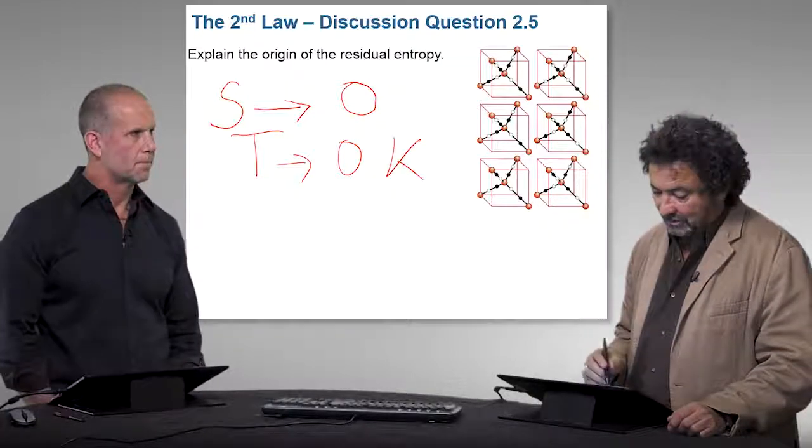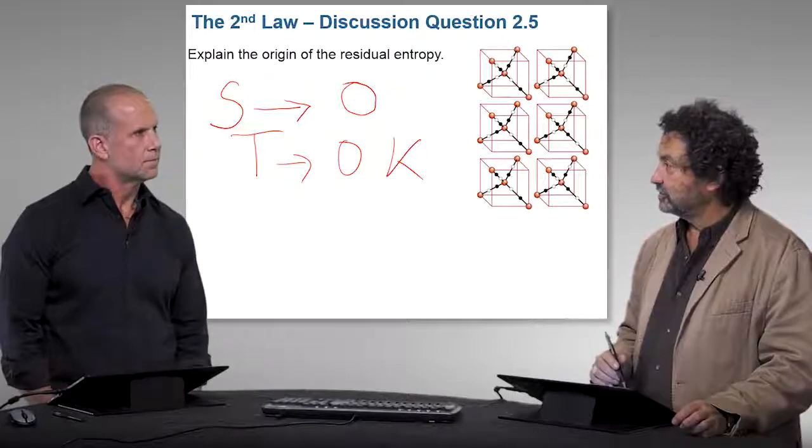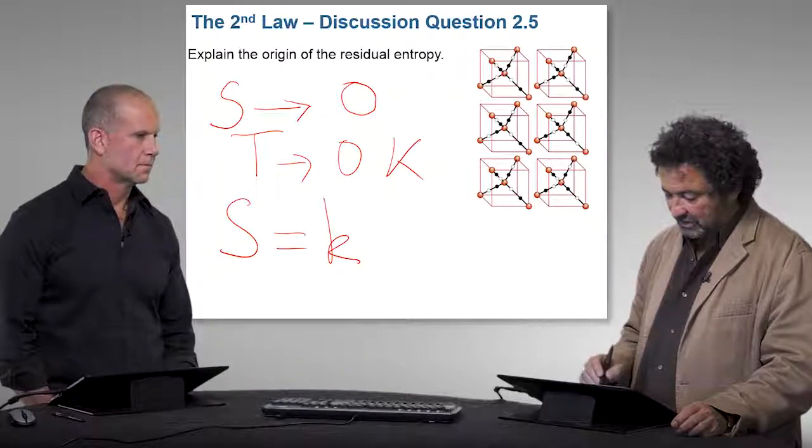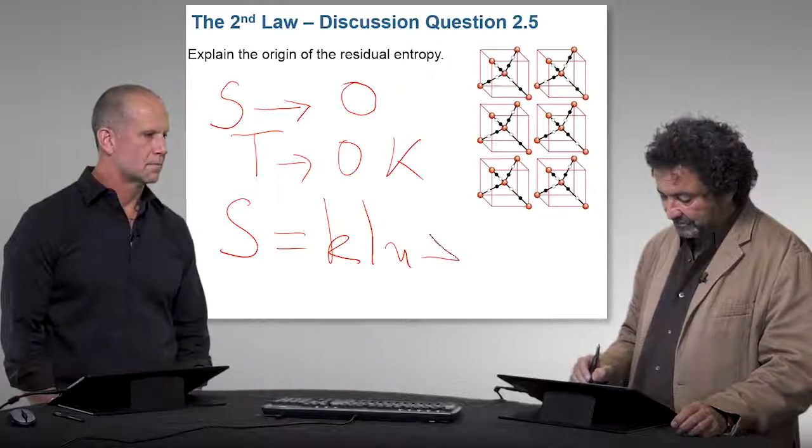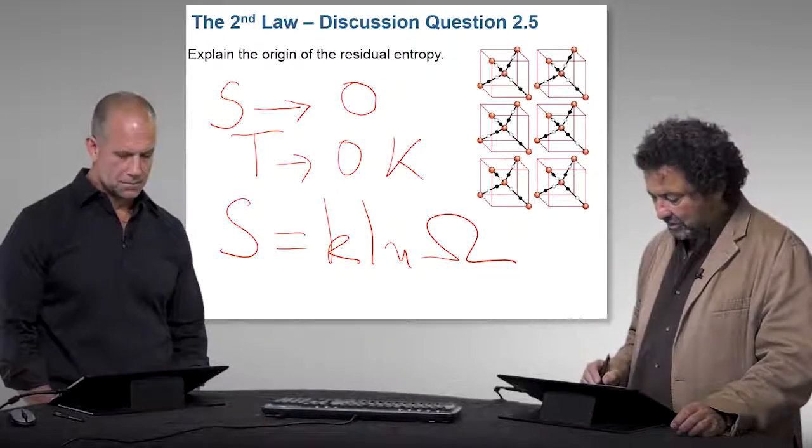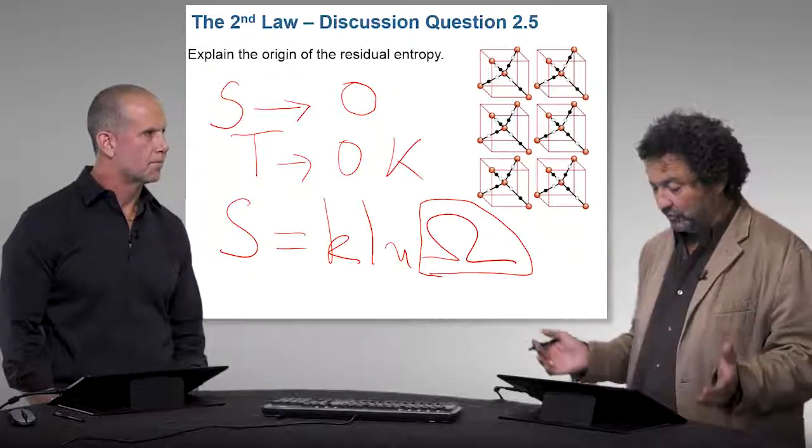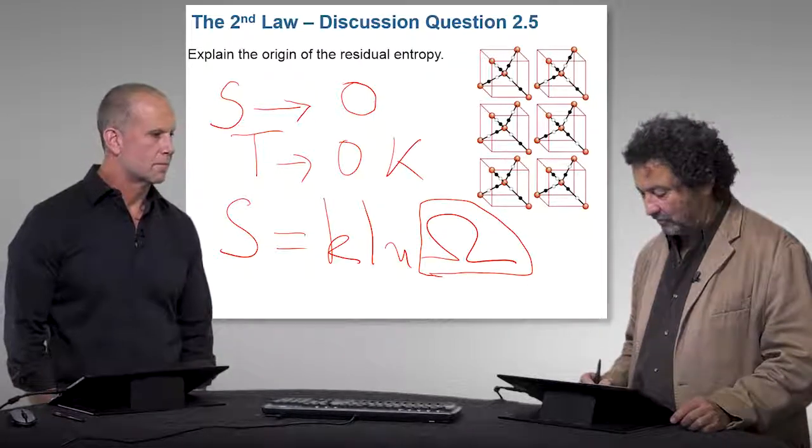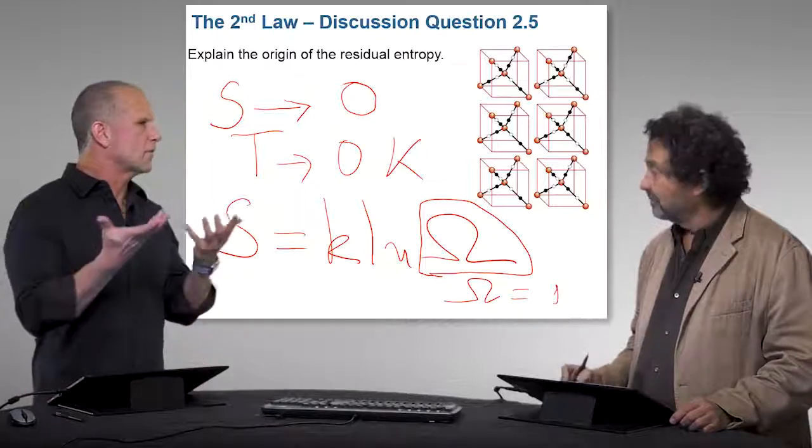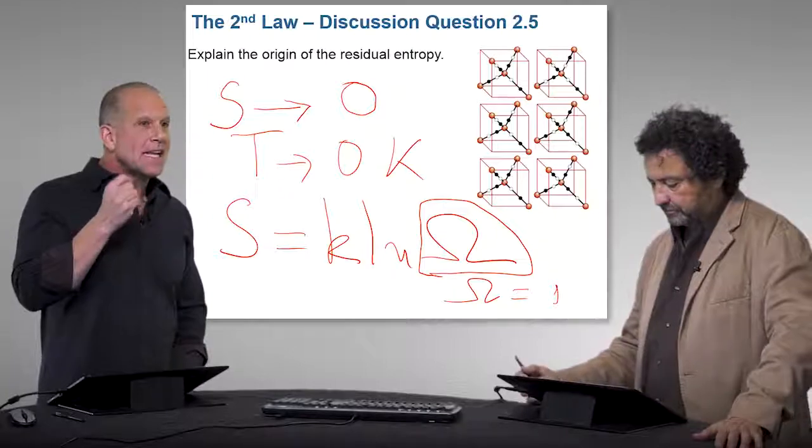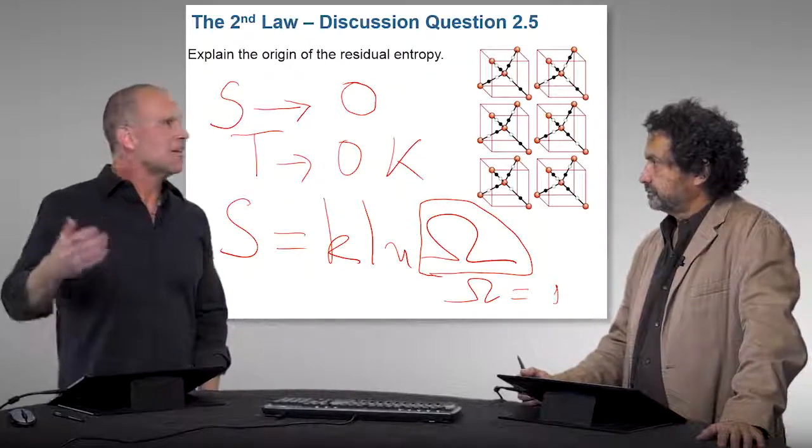But it turns out that under some conditions it doesn't go to zero. And the key equation is Boltzmann equation that connects the number, the disorder in the system. So if there is no disorder, there is only one configuration, one microstate. One state that defines everything. But in practice, there never is.